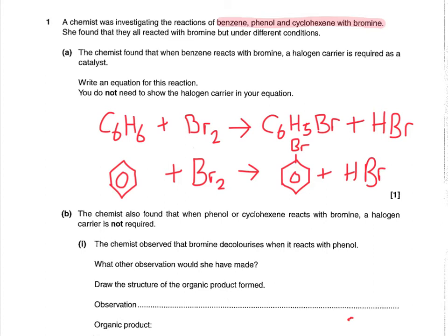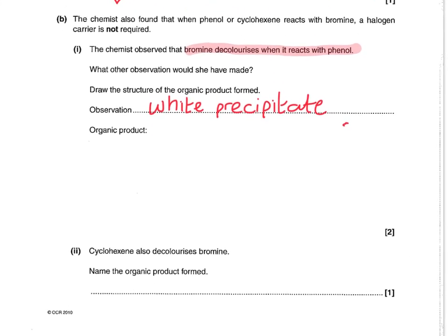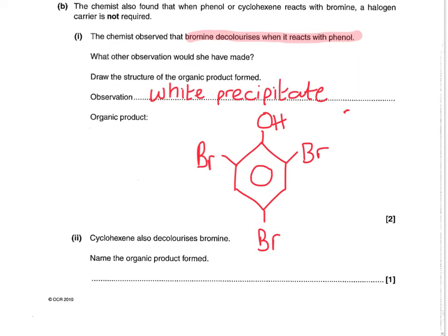The chemist found that when phenol or cyclohexene reacts with bromine, a halogen carrier isn't required. She also noted that bromine decolorizes when it reacts with phenol. The product made is 2,4,6-tribromophenol, which is also a white precipitate. Notice that the question asks for the organic product only, so you don't need the HBr — but obviously if writing out the full equation you'd include the second product as well.